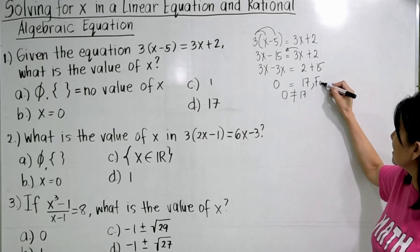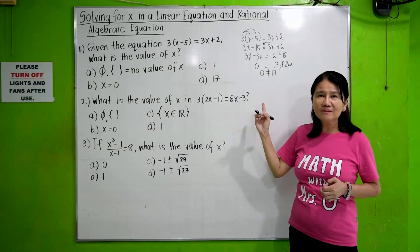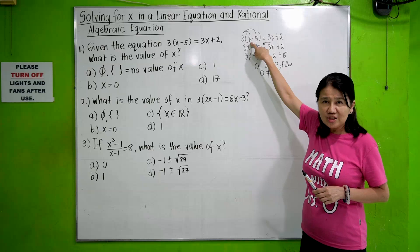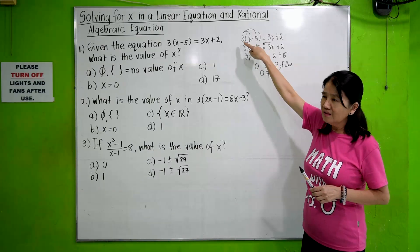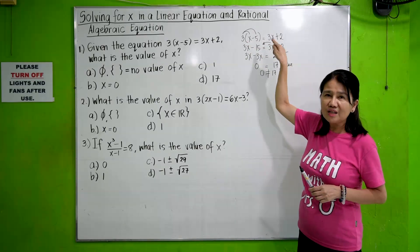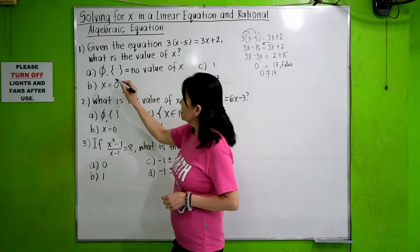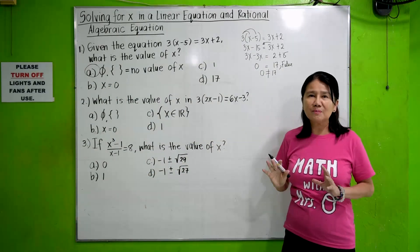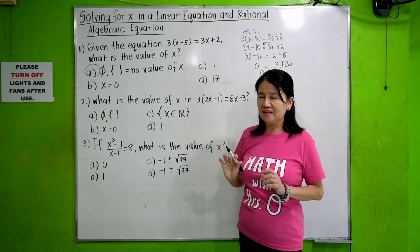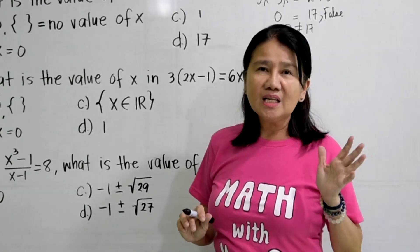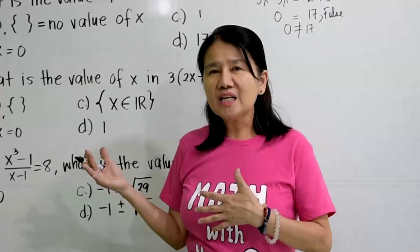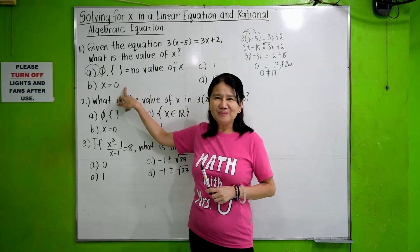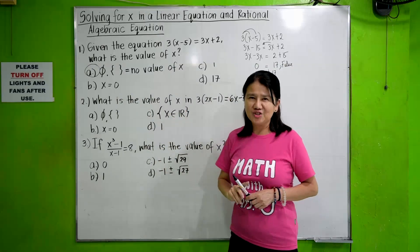You see that 0 is not equal to 17. This is a false statement, which means that whatever X value you substitute into the original equation, you will not satisfy it. So the answer is letter A, empty set — no value of X can make the equation true.